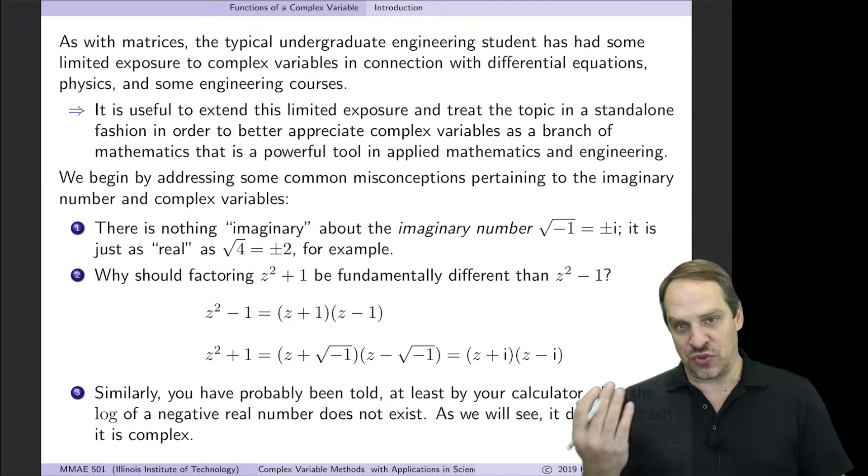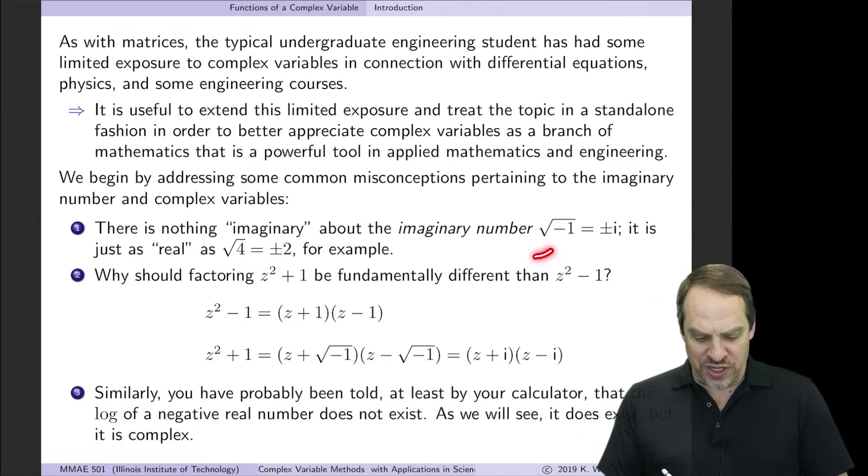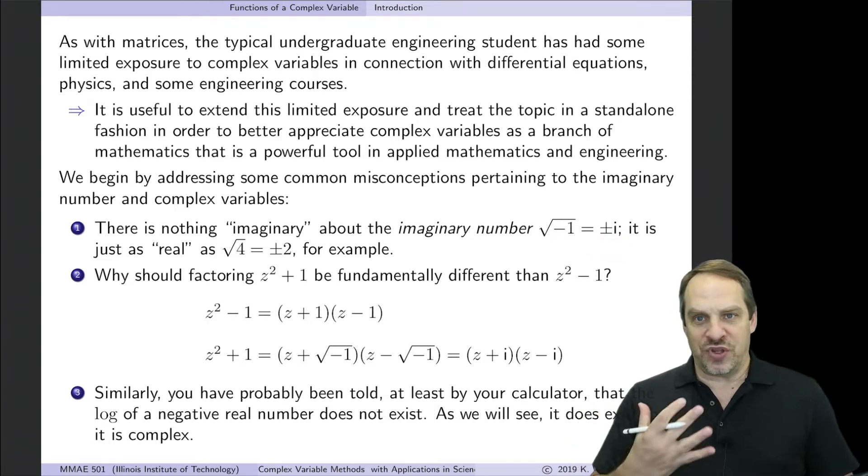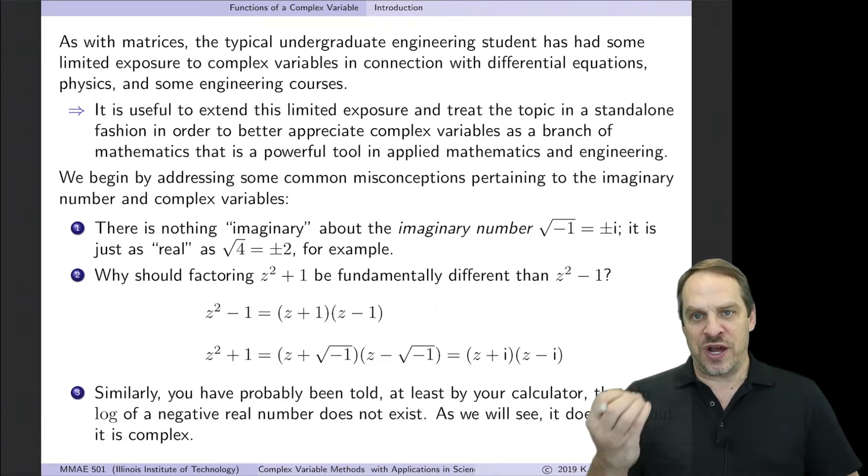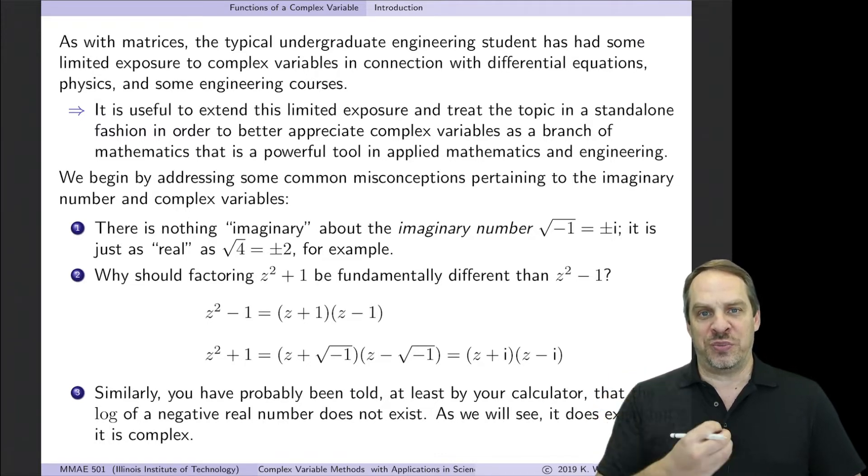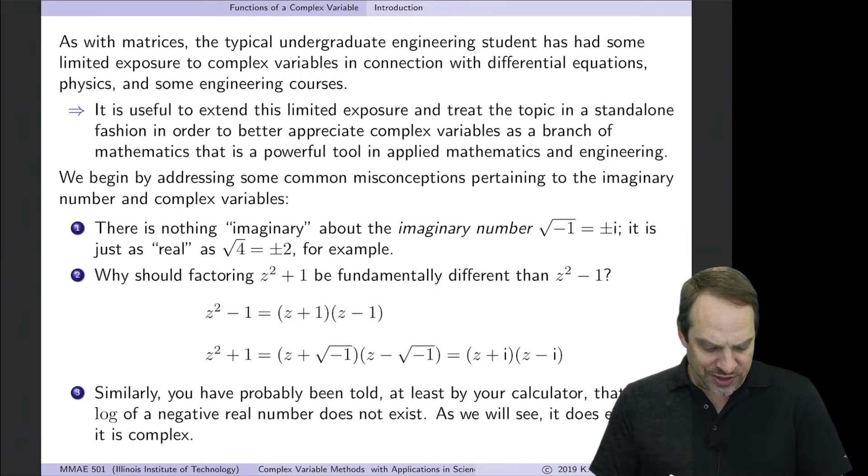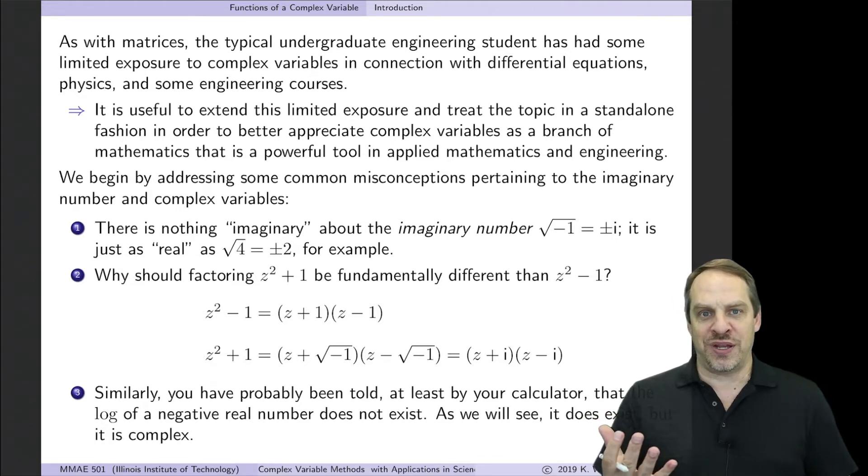So we all know square root of four is plus and minus two. That doesn't bother us. It never has because it's a real number. But if I put a negative number in there, like square root of minus one, well, it happens to give me an imaginary result. But from the point of view of the square root as an operator, there's no reason to think it should be fundamentally different if I put in a negative number versus a positive number. Likewise, if you think of factoring, so if we were to factor z squared plus one versus z squared minus one, it's just a difference in sign. Why would that make any difference in how we or whether we even can do this factoring?